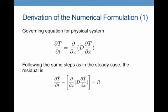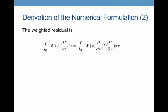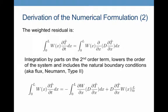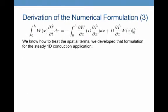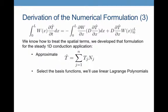So we know how to approach this. The first thing we do is determine what the residual is — we approximate with T-hat and form the residual. Next, we form the weighted residual, and after forming the weighted residual, we integrate the second order term by parts to lower the order of the system and include the natural boundary conditions. The result is an equation that looks very familiar. We know how to treat the spatial terms. We approximate T-hat by saying that T equals the sum from j equals 1 to the number of nodes of t_j times N_j, where t_j is a coefficient and N_j are basis functions — specifically, linear Lagrange polynomials.